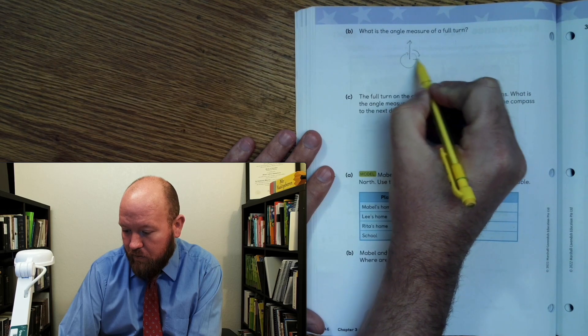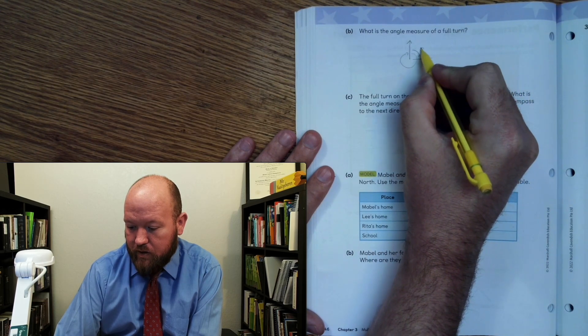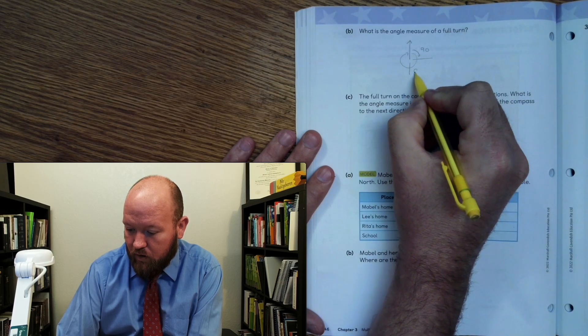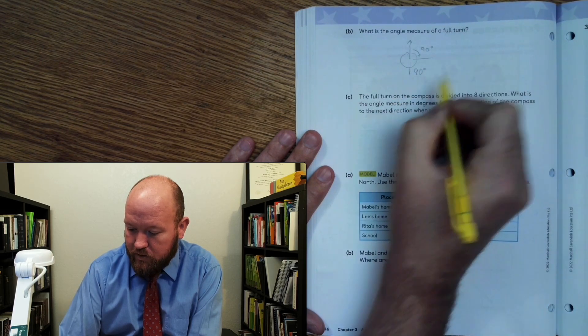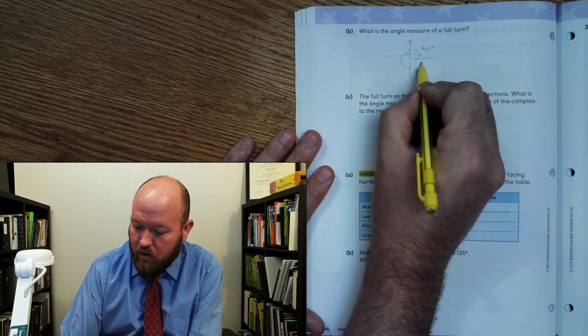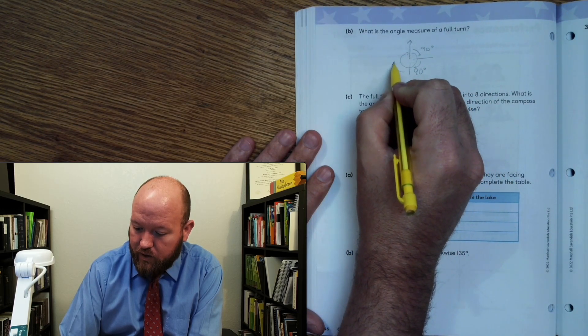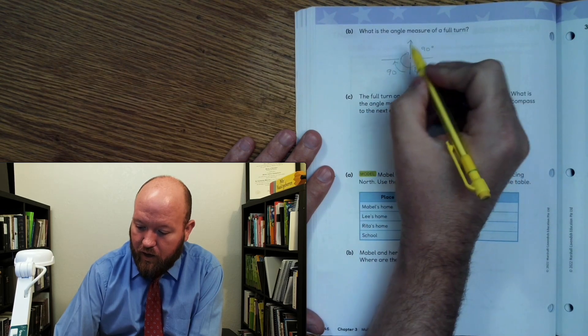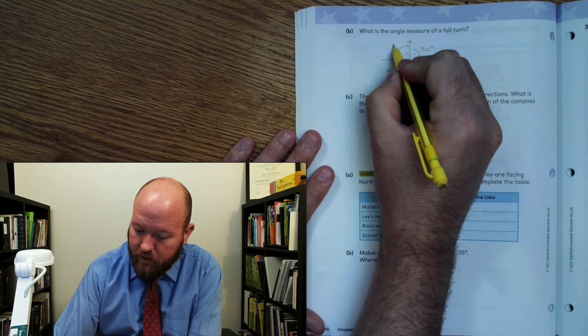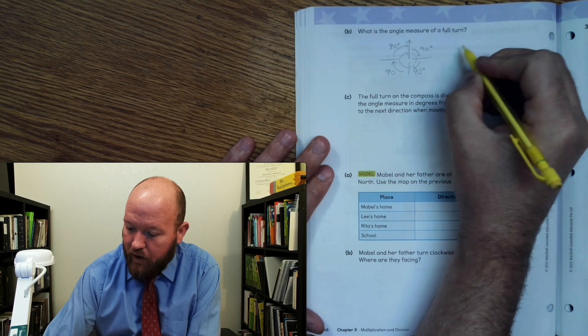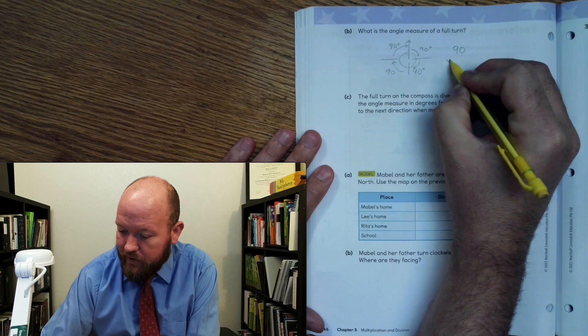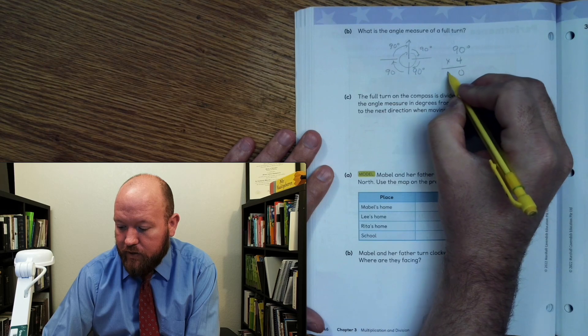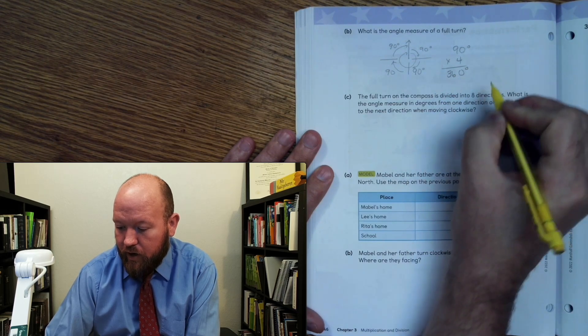From here to here is how far? 90 degrees. From here to here is how far? 90 degrees. From here to here is how far? 90 degrees. And then go all the way back around is what? 90 degrees. And what is 90 times 4? 4 times 0 is 0. 4 times 9 is 36. 360 degrees.